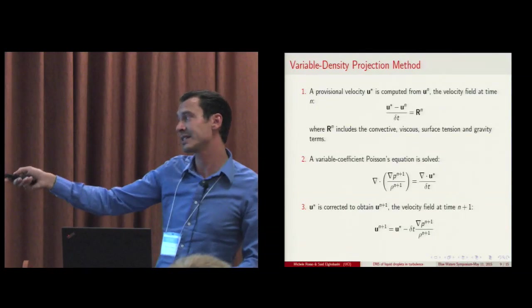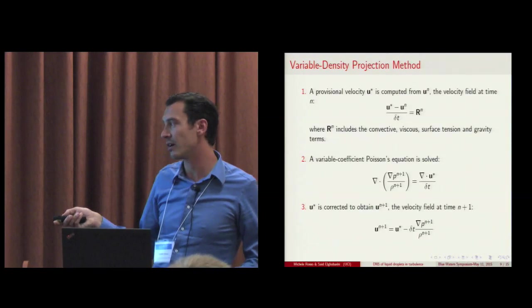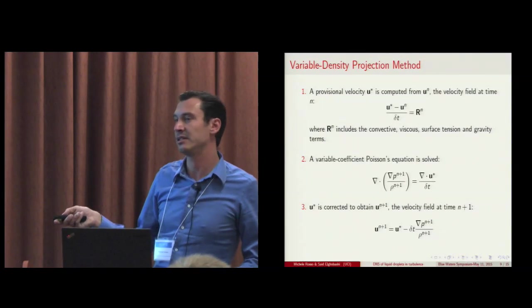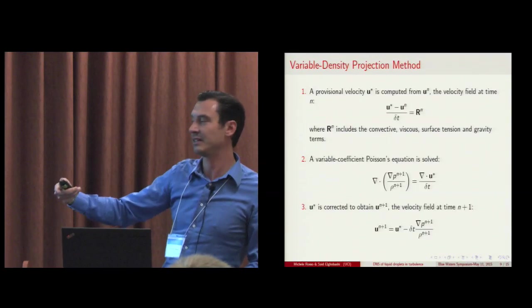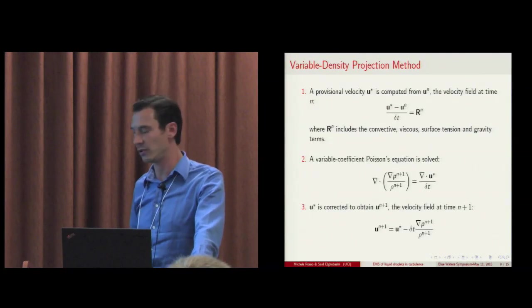Finally, the pressure at the next time level is used to correct the provisional velocity u star and obtain the velocity at the next time step, which is divergence-free and therefore satisfies the continuity equation.